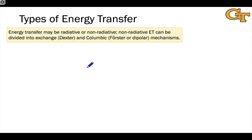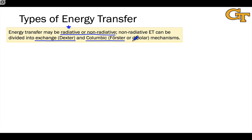In thinking about how to classify the different types of energy transfer, we can make two important distinctions. The first is between radiative and non-radiative energy transfer. Radiative energy transfer — also called trivial energy transfer — involves the emission of a photon from the excited state and the absorption of that photon by the energy acceptor. So in that sense it's no different than fluorescence by the energy donor and singlet-singlet absorption by the energy acceptor. It has a few quirks we'll get to later, but by and large it's not that interesting theoretically. Non-radiative energy transfer is much more interesting, and non-radiative mechanisms can be divided into two types.